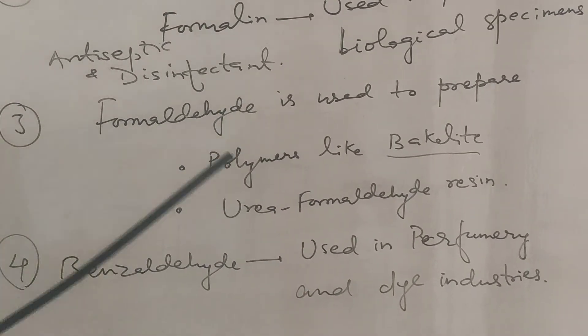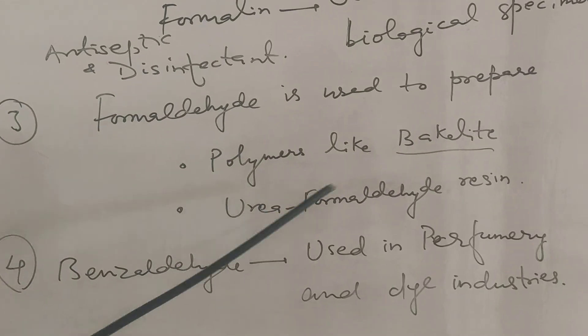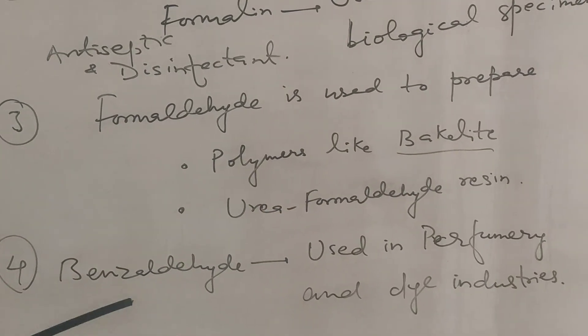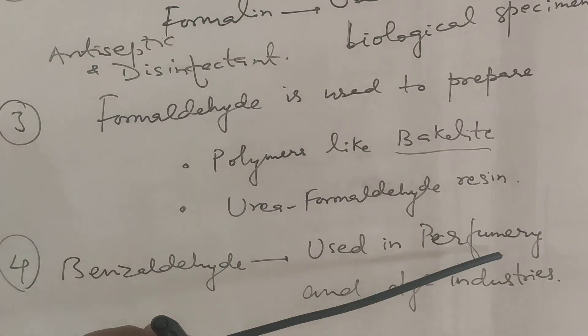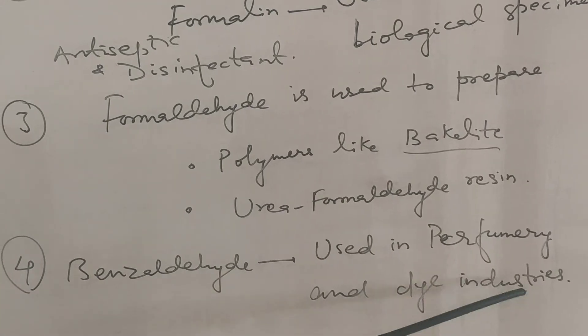Formaldehyde is used to prepare polymers like bakelite and urea formaldehyde resin. Benzaldehyde is used in perfumery and dye industries.